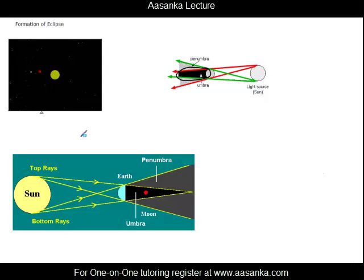Now this is what is called a Lunar Eclipse. When the shadow of Earth falls on the Moon, this region is the umbra region which we have discussed. Rays coming from the top end, the way we discussed earlier — and you see Moon falls in the shadow of the Earth.